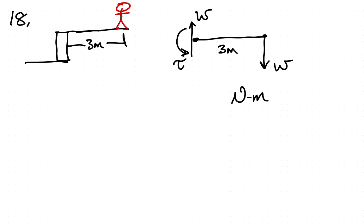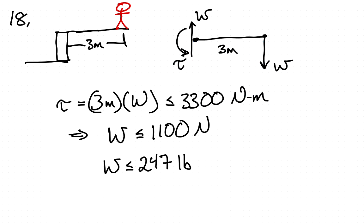We can calculate that torque is just three meters times the weight of the mutineer. And if this is to not break before the person gets to the end, then that has to be less than or equal to 3,300 Newton meters. And that tells us that the weight of the mutineer has to be less than or equal to 1,100 Newtons.